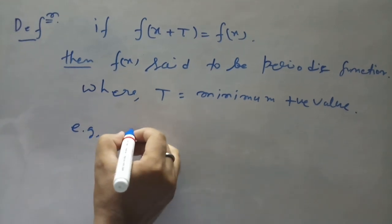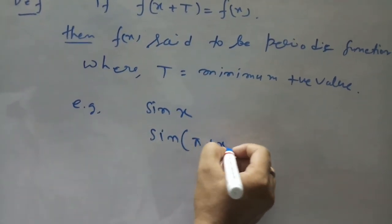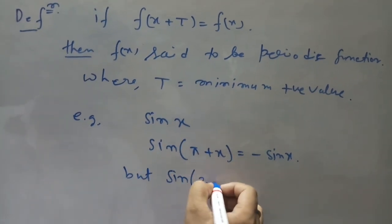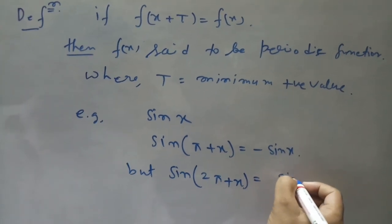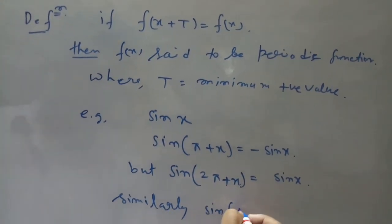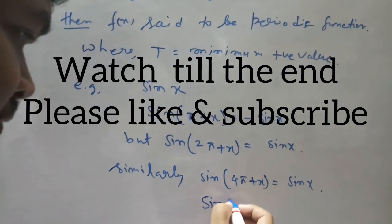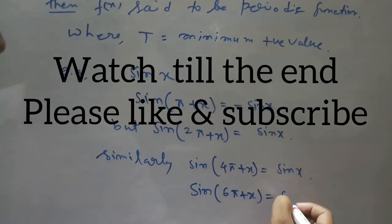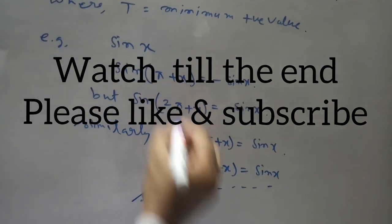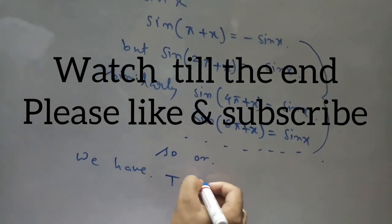For example, taking sin x — what is the period of sin x? We know sin(π + x) equals minus sin x, but sin(2π + x) equals sin x. Similarly, we have sin(4π + x) equals sin x, and sin(6π + x) equals sin x, and so on. Therefore, from this, we have t equal to 2π,